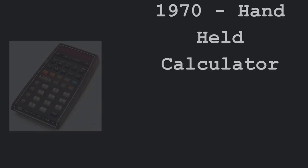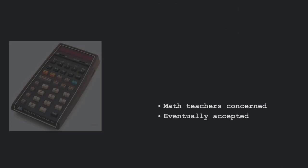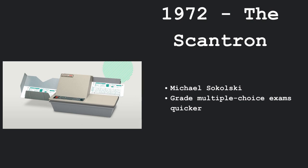In 1970, the handheld calculator was invented and math teachers were concerned that using a calculator would impair fundamental math abilities, but it was eventually accepted. In 1972, the Scantron was invented by Michael Sokolsky and it was used to grade multiple choice exams much quicker than by hand.